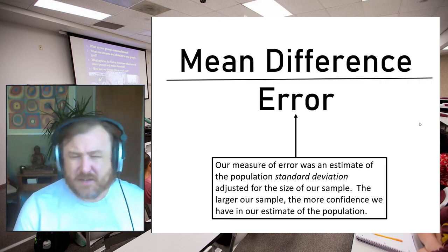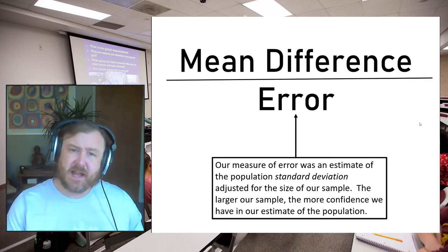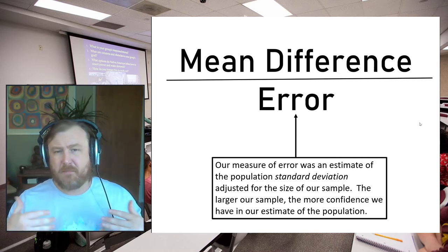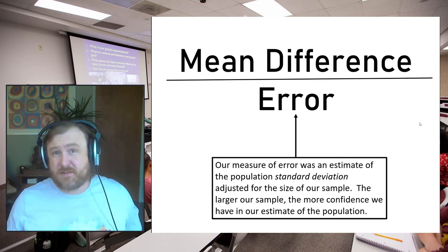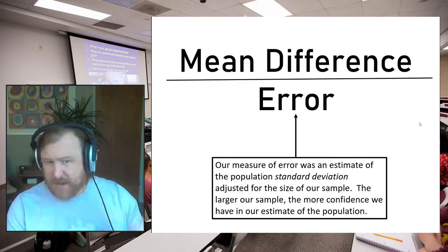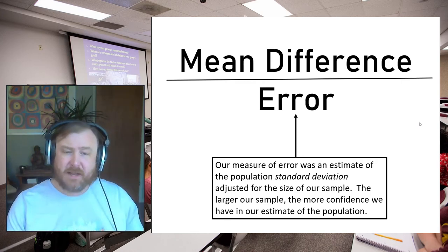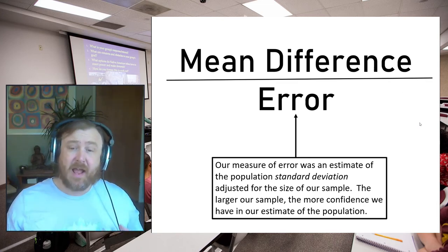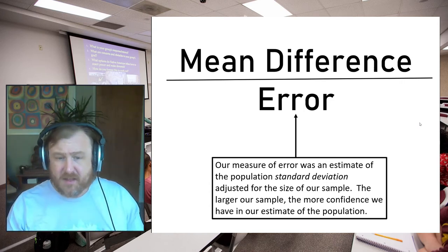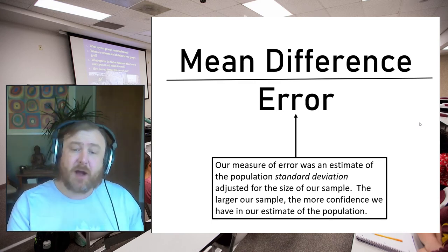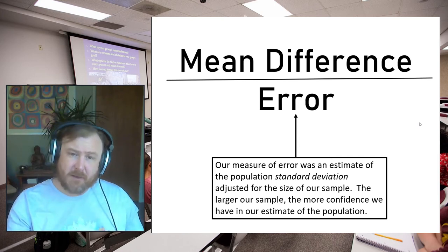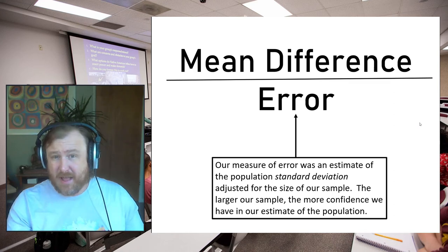Let's go back to what we discussed when doing t-tests. Consistently, we saw the idea that all we're really doing is looking at mean difference over error — and that's no different in ANOVA. Keep in mind that error is a measure of sampling error: an estimate of the population standard deviation adjusted for our sample size. The larger our sample, the more it reduces our error, because a bigger sample means our estimate of the population will be closer to the actual population and we have more confidence in that estimate. A smaller sample with less statistical power would add more error to our estimate.